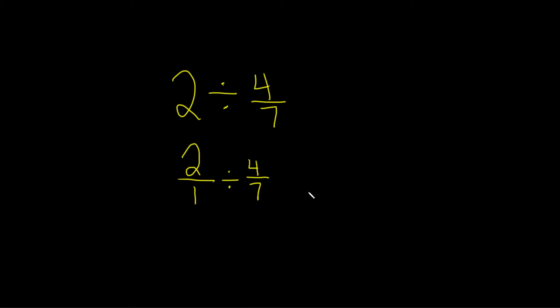Okay, so now let's get rid of this division sign. Whenever you divide, you really just multiply by the reciprocal. So this is 2 over 1 times, and then the reciprocal. Well, what is the reciprocal of 4 7ths? You just flip it. So it's 7 over 4.